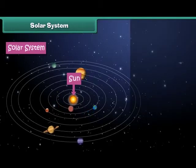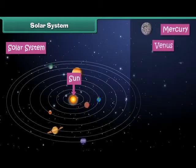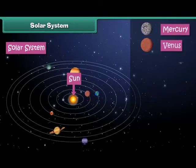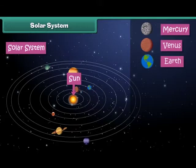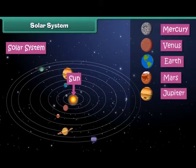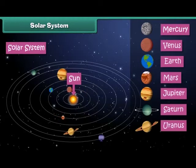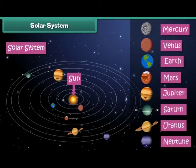The eight planets are Mercury, Venus, Earth, Mars, Jupiter, Saturn, Uranus, and Neptune.